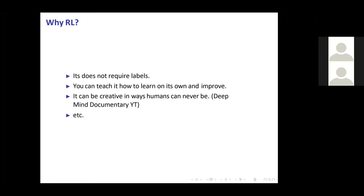Supervised learning, although very powerful, requires labels to tell the machine which predictions are correct or incorrect. This is often a very cumbersome and expensive process that we just cannot afford. If we can avoid requiring labels, things become a lot easier.